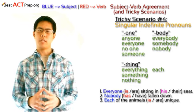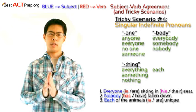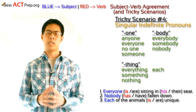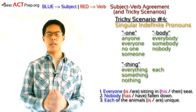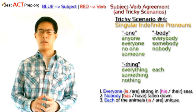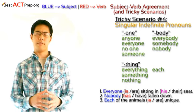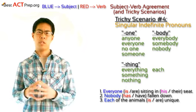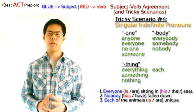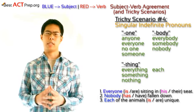Take a look at the first example sentence. A lot of people will want to write 'everyone is sitting in their seat,' but this isn't proper English because 'everyone' is singular and 'their' is plural. Also, take a look at the third example sentence. The word 'each' is usually followed by something plural — in this case, 'of the animals,' which is plural. But although we'll probably feel very tempted to give it a plural verb because that seems to sound right, it needs to take a singular verb.